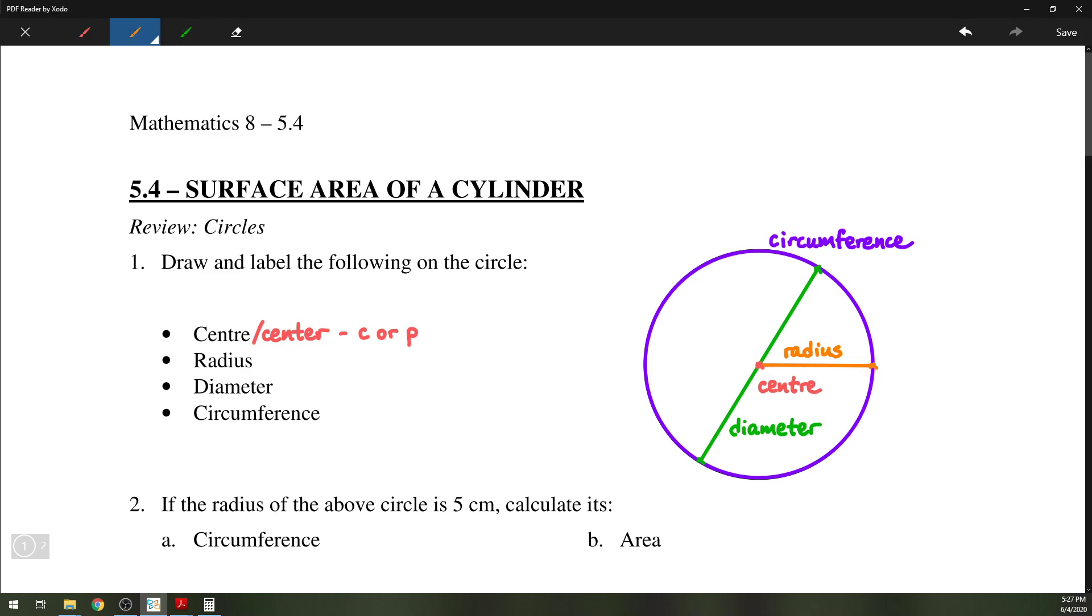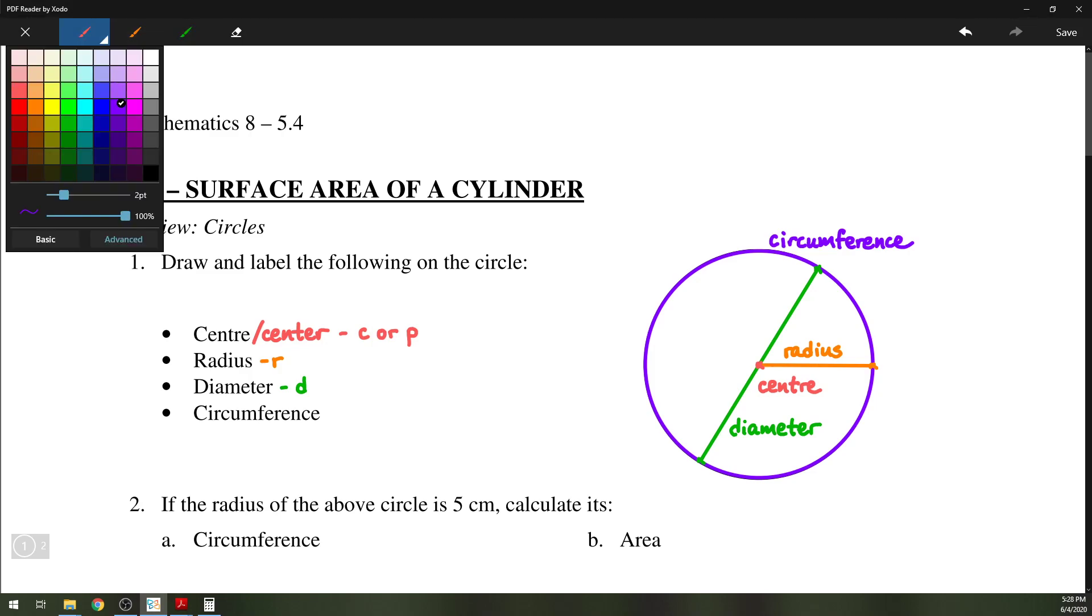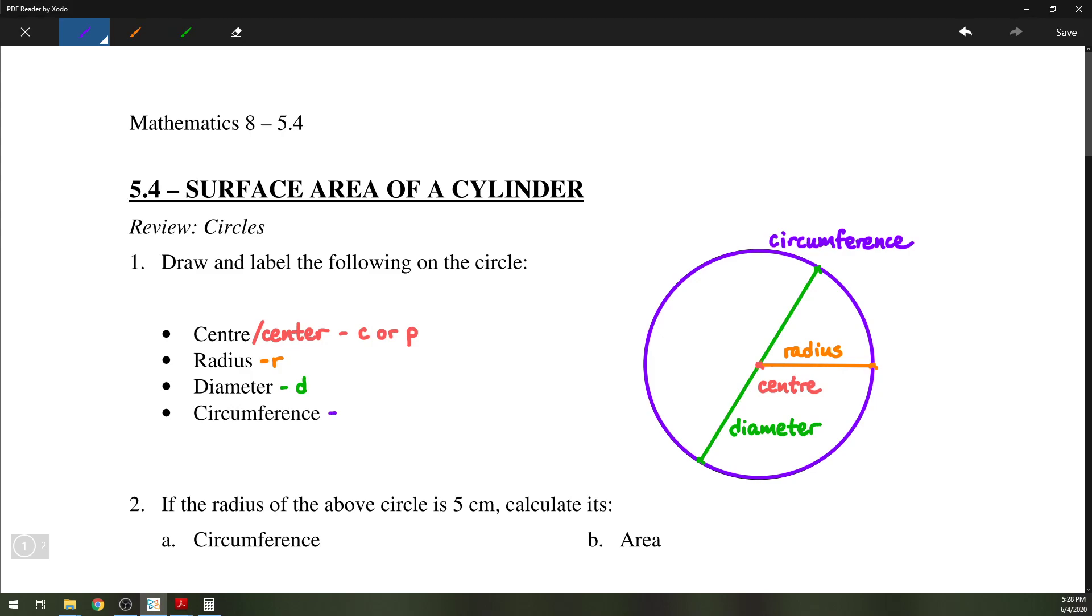Next up we have the radius, which is usually denoted with the letter R. Diameter is usually labeled with the letter D. And finally, the circumference is usually labeled with a capital C.